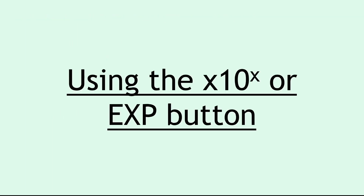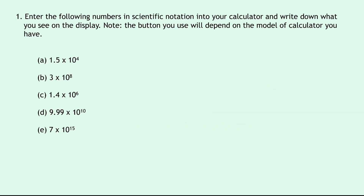Next, we're going to practice using the times 10 to the x or the EXP button. Remember, this depends on which calculator you have, so check which button you're going to be using before we move on. Question one says to enter the following numbers in scientific notation into your calculator and write down what you see on the display. Note the button you use will depend on the model of calculator you have.